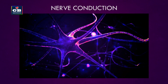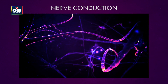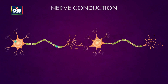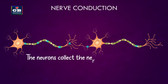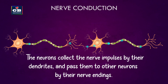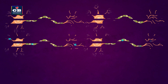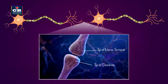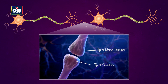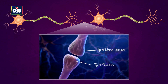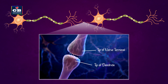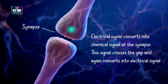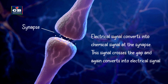The neurons carry information to different parts of the nervous system. This is called nerve conduction. The neurons collect nerve impulses by their dendrites and pass them to other neurons by their nerve endings. The nerve endings of one neuron and the dendrites of another are not directly attached — there is a gap between them. This gap or junction is called a synapse. At the end of the nerve terminals, the electrical impulse is converted to a chemical signal.